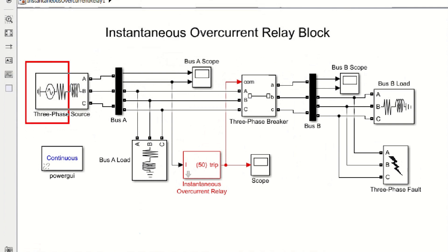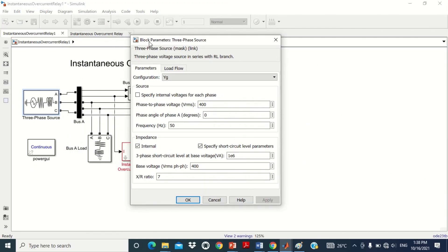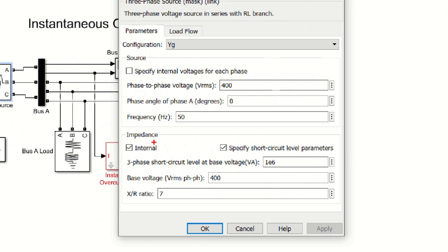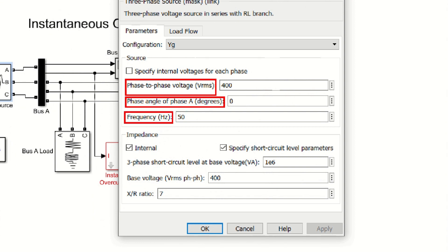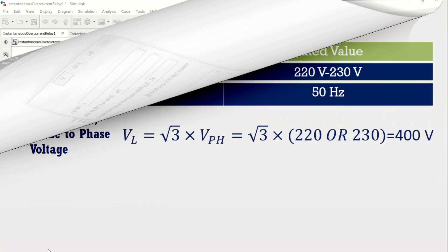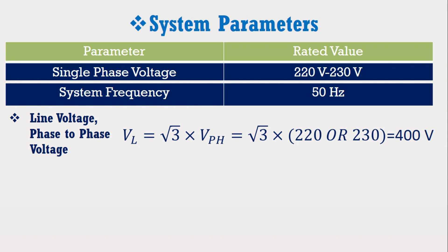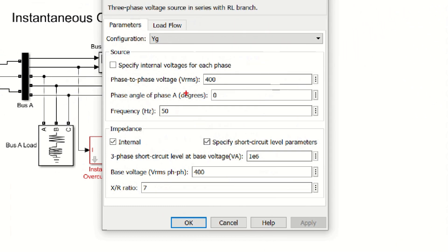This model contains the three-phase voltage source block. Double click on it to see its values. In the parameters section, the first data consists of phase-to-phase voltage, phase angle, and frequency. You may use any voltage of your choice. However, here in this model 400 volts is used. We know that single-phase voltage in Pakistan is 220 to 230 volts, so the line voltage or phase-to-phase voltage becomes 400 volts. The angle and frequency used here are 0 degrees and 50 Hz respectively.